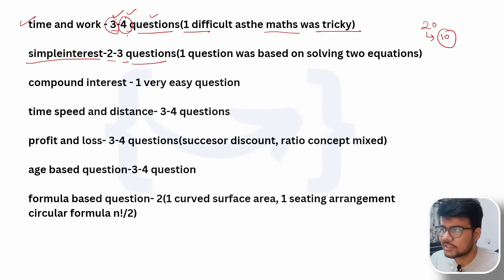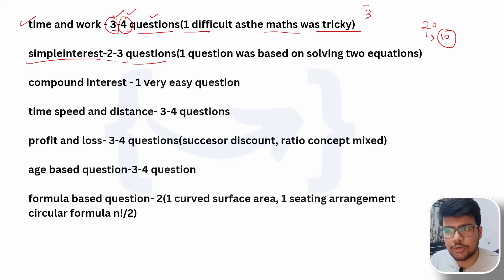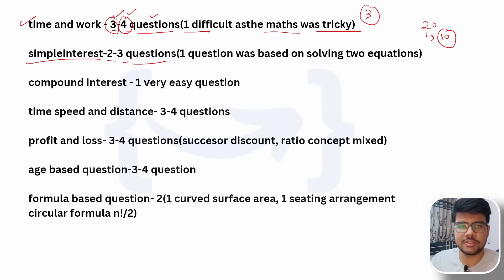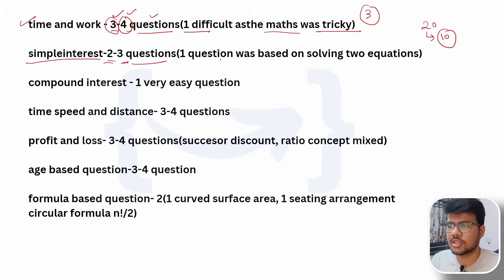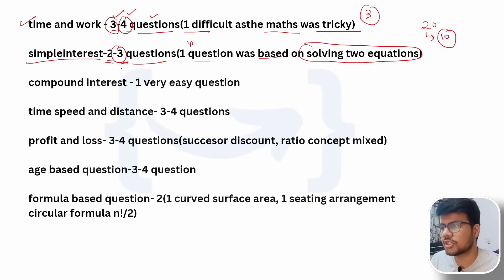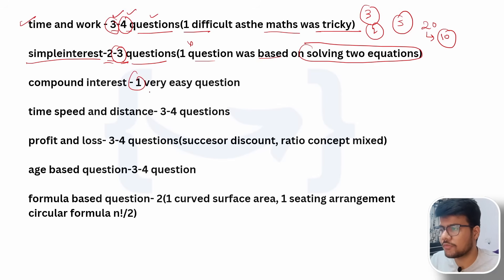The time and work questions are very easy — simple formula-based. For example, if a person works for a certain amount of time, how much work is done. Out of four questions, you can assume three are doable. For simple interest, two to three questions were there, with one based on solving two equations. Out of three questions you can do two. So you've already solved around five questions at this point.